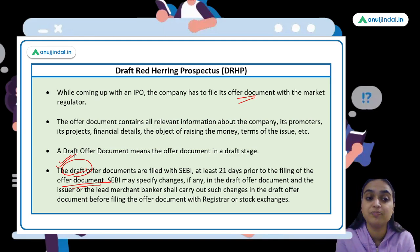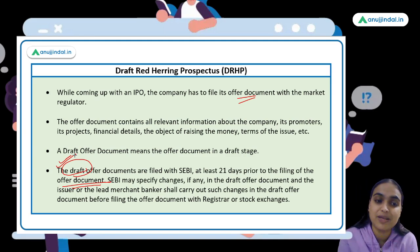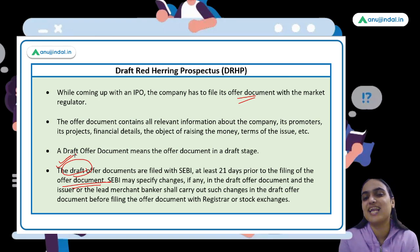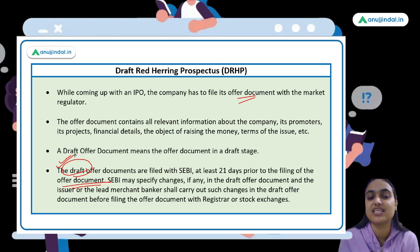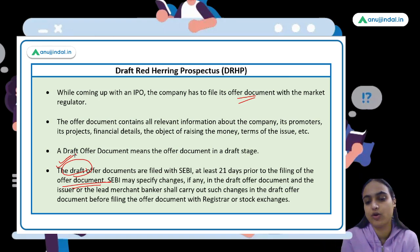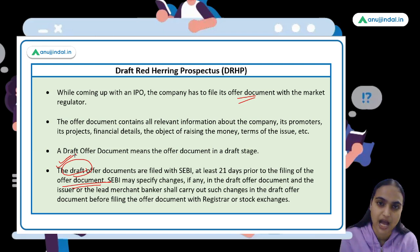Meanwhile, the draft document being prepared is the Draft Red Herring Prospectus (DRHP). LIC has filed this DRHP, which means it has started the procedure of going forward with its IPO.